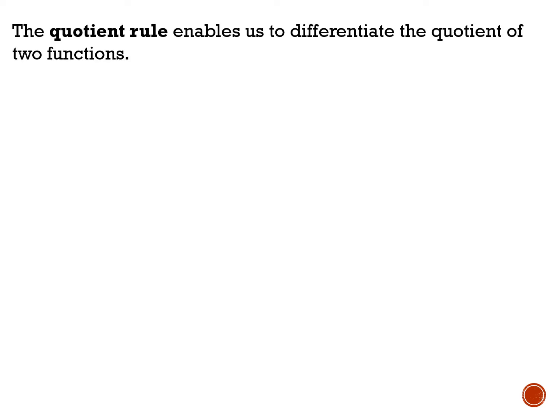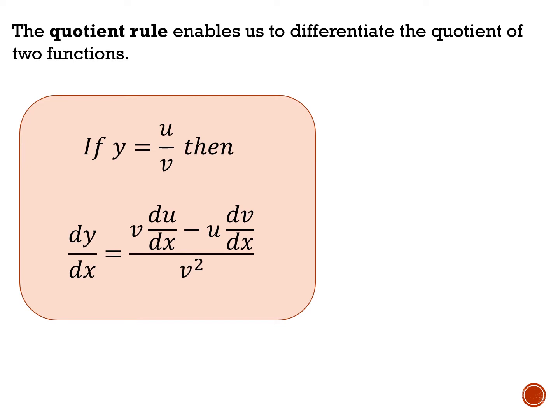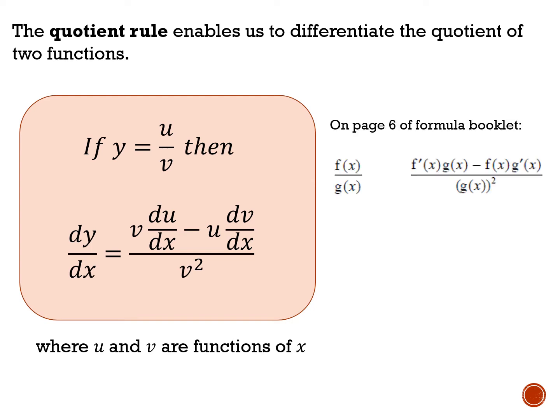The quotient rule enables us to differentiate the quotient of two functions — one function divided by another. If y equals u over v, then dy/dx equals v du/dx minus u dv/dx, all over v squared. Notice there's a minus sign, so order matters, unlike the product rule. This is given in the formula book on page six under differentiation.